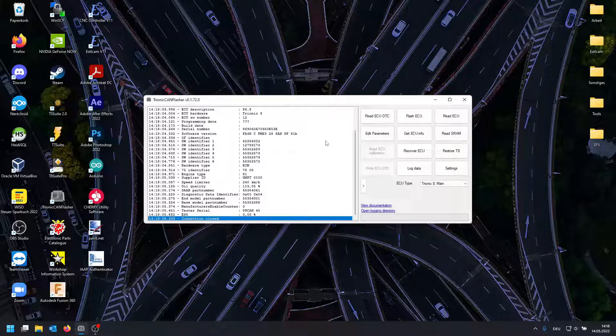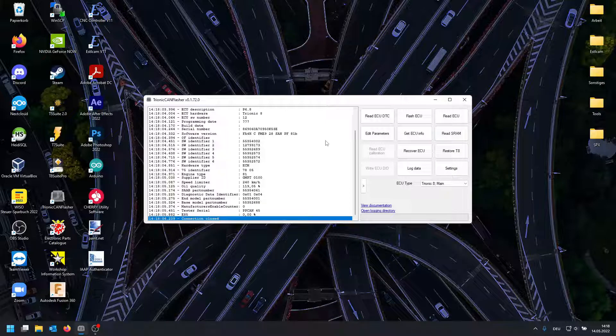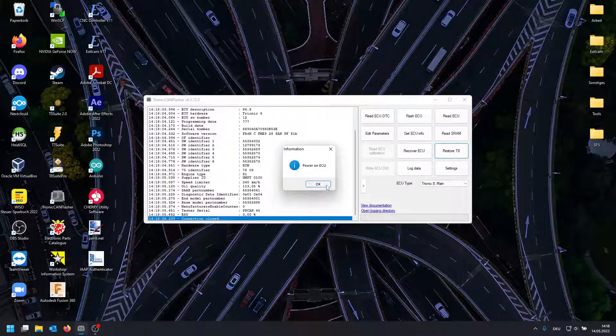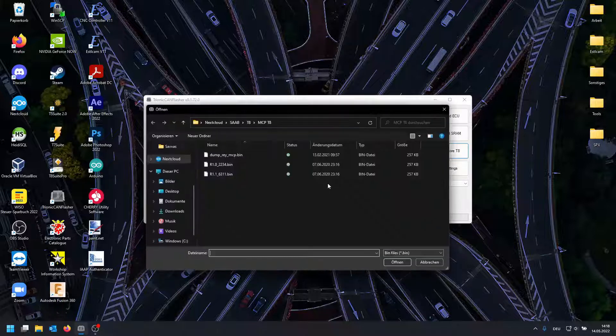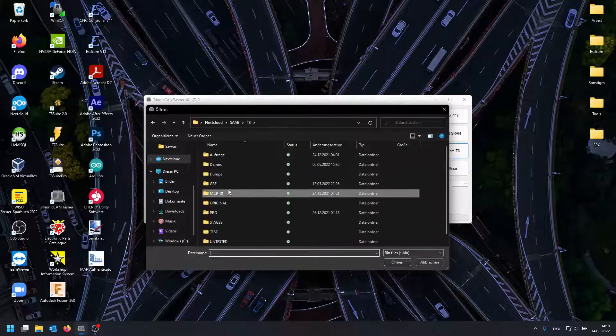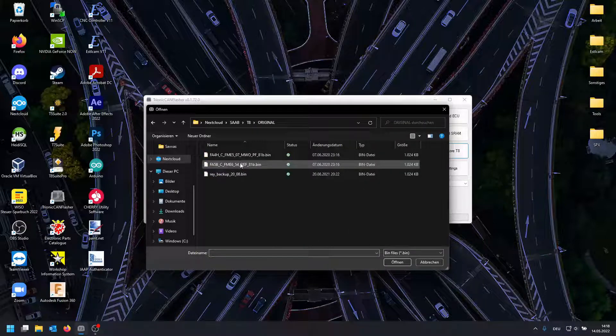So there are actually two ways you can restore the ECU. You can click on restore T8 which is kind of trying to get it into the bootloader mode so we're going to try this and it tells you when to power on the ECU. I've done that and it will now ask me for a bin file and actually I'm going to use one of my bins. So here we go.